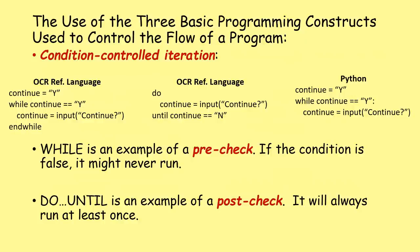For condition-controlled iteration we have the while loop, which is the most commonly used version, available in both OCR reference language and Python. While is a pre-check condition - if the condition is false it might never run. The do until is a post-check - it will always run at least once before evaluating the condition. Do until doesn't exist in Python, but you might see it in the exam.